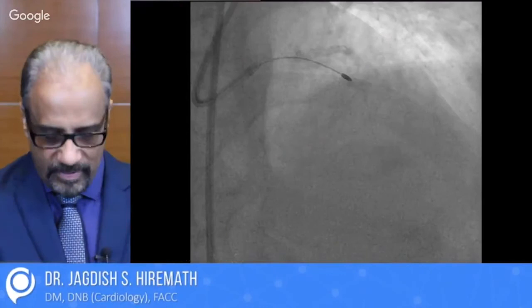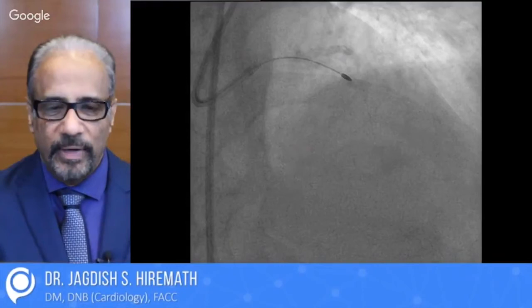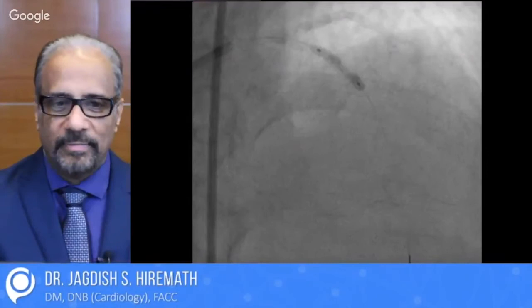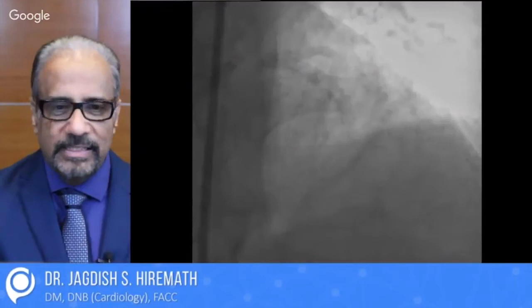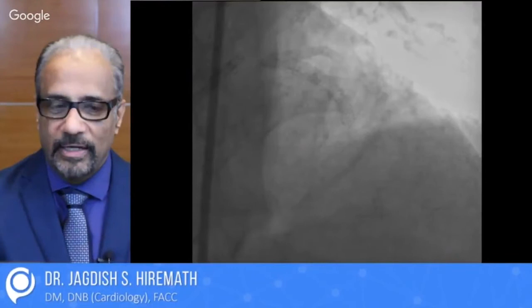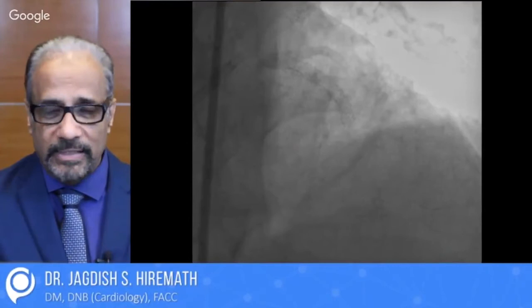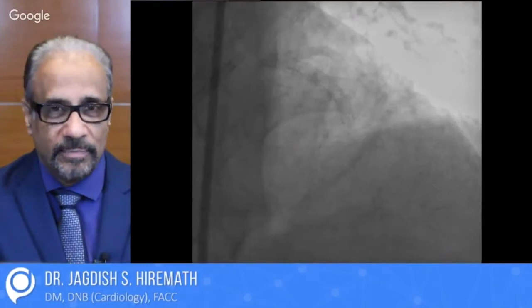This shows a dense calcification and this is a rotablator instrument going through the calcification. Unless you do the rotablator, the balloon cannot be implanted or expanded there. With the dense calcification, we could still manage a good result because the rotablator could cut the calcium. Rotablator is used more and more often these days because post-bypass patients come, octogenarian patients come, chronic diabetics come — they all have loads of calcium — and unless you do rotablator, angioplasty is not useful.